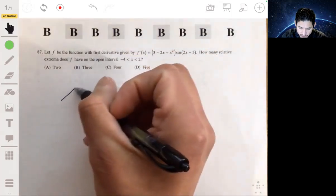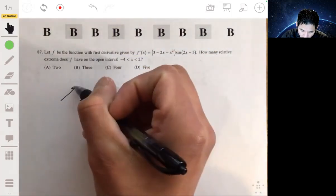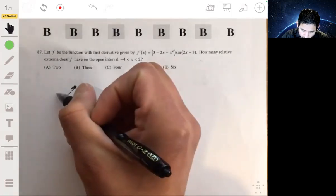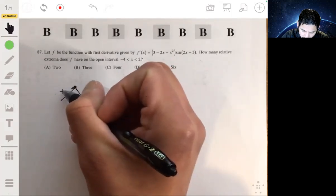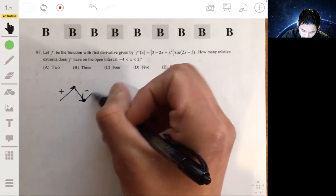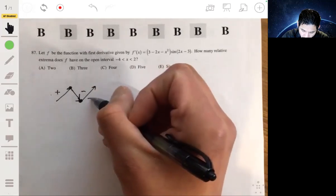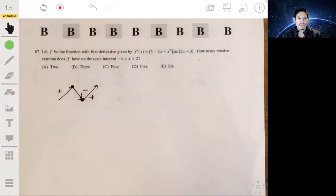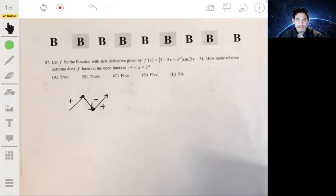Because remember, an extrema occurs at a local max when the graph goes from increasing to decreasing. Here the first derivative is positive, here it's negative. And then a minimum would be where it goes from being negative to positive. So we want to study the graph of the derivative, so let's first graph this.